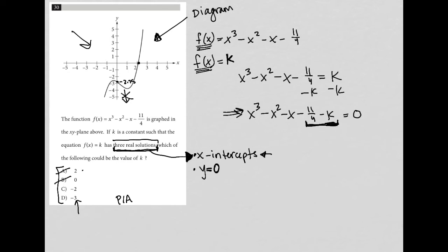If k equals two, which is answer choice A, then that would be -11/4 minus two. That would be shifting it down. That makes it even more negative. It makes the y-intercept go down two units. So that can't be it. We need to go up.